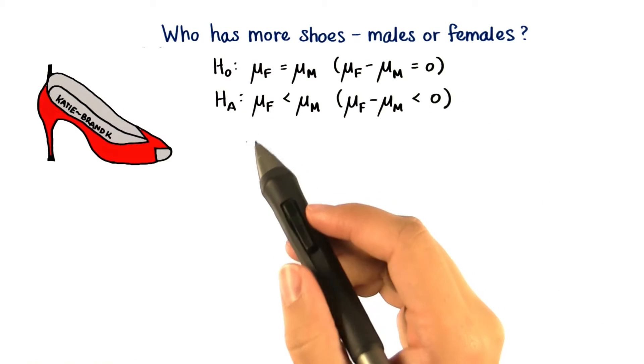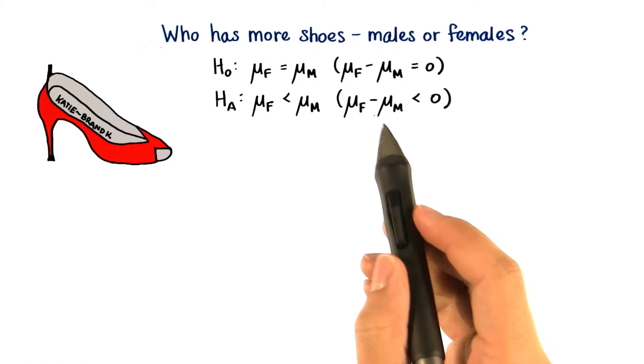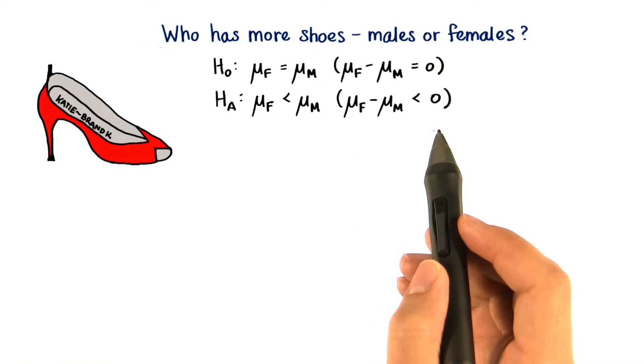One alternative hypothesis could be that females own less shoes than males. Or that if we subtract the number of shoes owned by males by the number of shoes owned by females, we get a negative number.